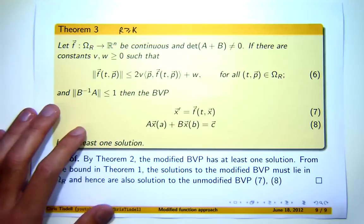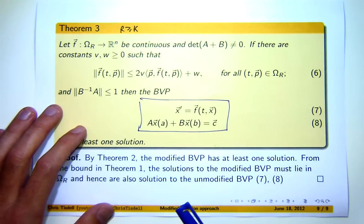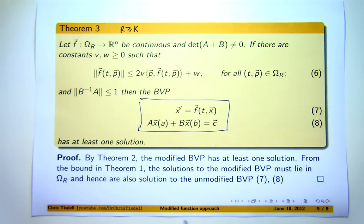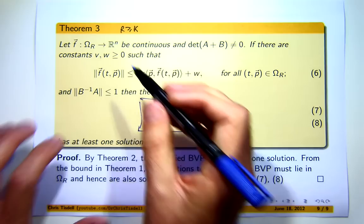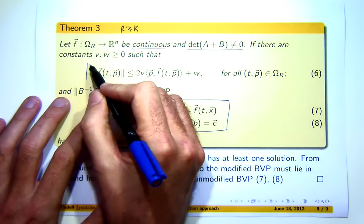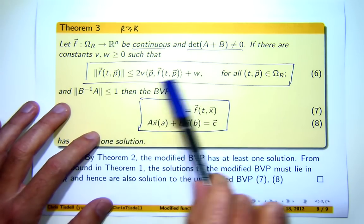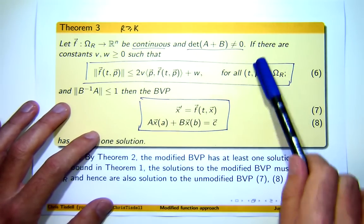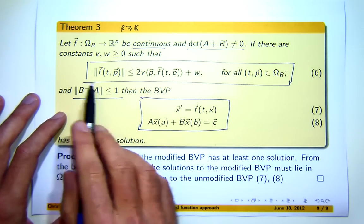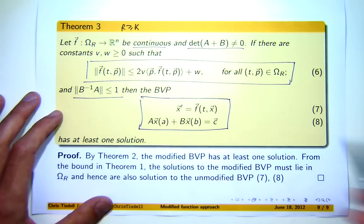So, let's look at the main existence result now. Suppose I've got a boundary value problem where F is defined on this set and the R is greater than or equal to K where the K was the constant from theorem 1. Suppose it's continuous, this determinant condition is satisfied and there exist constants, non-negative constants V and W such that little f satisfies an inequality like this on this smaller set. Now, if this condition is also satisfied, then this boundary value problem has at least one solution.